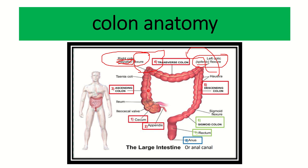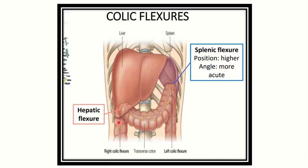So the parts of the colon are: cecum, appendix, ascending colon, transverse colon, descending colon, sigmoid colon, rectum, and anus. The right colic flexure is on the right side and the left colic flexure on the left side. Here in this picture we can see the hepatic flexure, or right colic flexure, located under the surface of the liver.